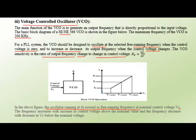The VCO sensitivity K0 is the ratio of output frequency change to change in control voltage: K0 = ΔF0 / ΔV. From the figure, when VC is minimum, F0 is minimum; when VC is nominal, F0 is nominal; and when VC is maximum, F0 linearly increases. Therefore, frequency increases with increasing control voltage, and decreases below nominal control voltage.